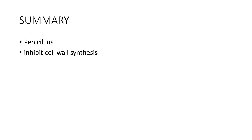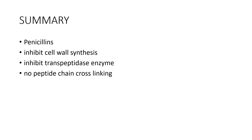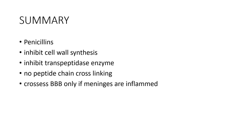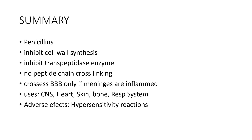In summary: penicillins inhibit cell wall synthesis by inhibiting the transpeptidase enzyme required for cross-linking, preventing peptide chain cross-linking. They can cross the blood-brain barrier only when the meninges are inflamed. They are used in the treatment of meningitis, endocarditis, skin, bone and joint infections, pharyngitis, otitis media, pneumonia, bronchitis, and syphilis. The most common adverse effect is hypersensitivity reactions.